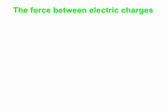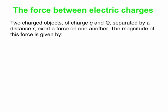We'll look at the force between electric charges. If we take two charged objects, we'll give one object a charge lowercase q, and the other one will have a charge of uppercase Q. And we'll separate them by a distance r. They exert forces on one another — they may be attractive or repulsive, depending on whether they have the same sign or opposite signs. The magnitude of the force is given by Coulomb's Law: the magnitude of the force is some constant k, times the product of the two charges, q times Q, divided by the square of the distance between them.